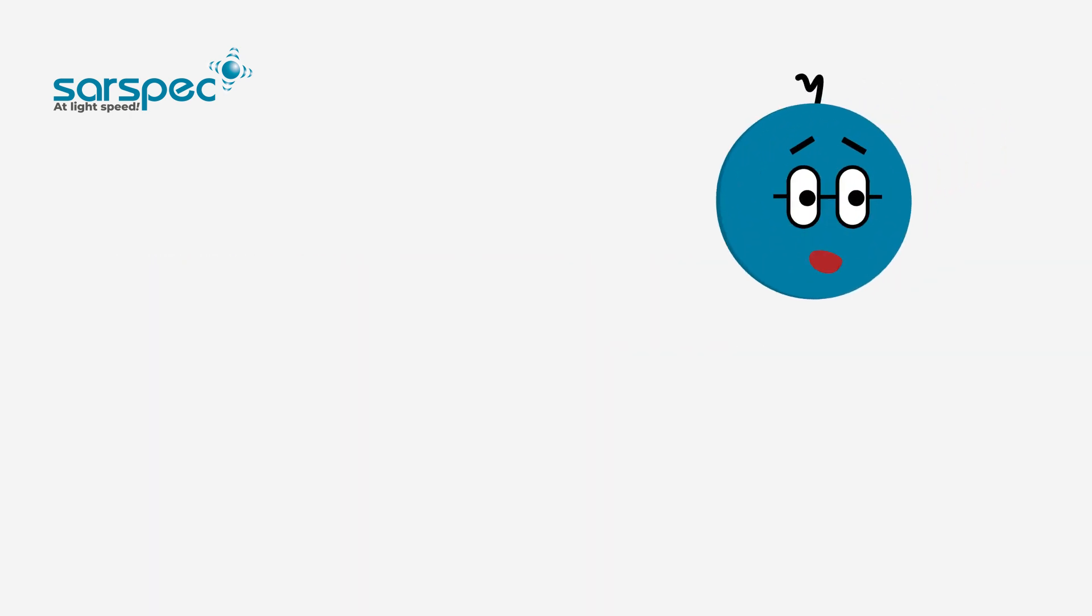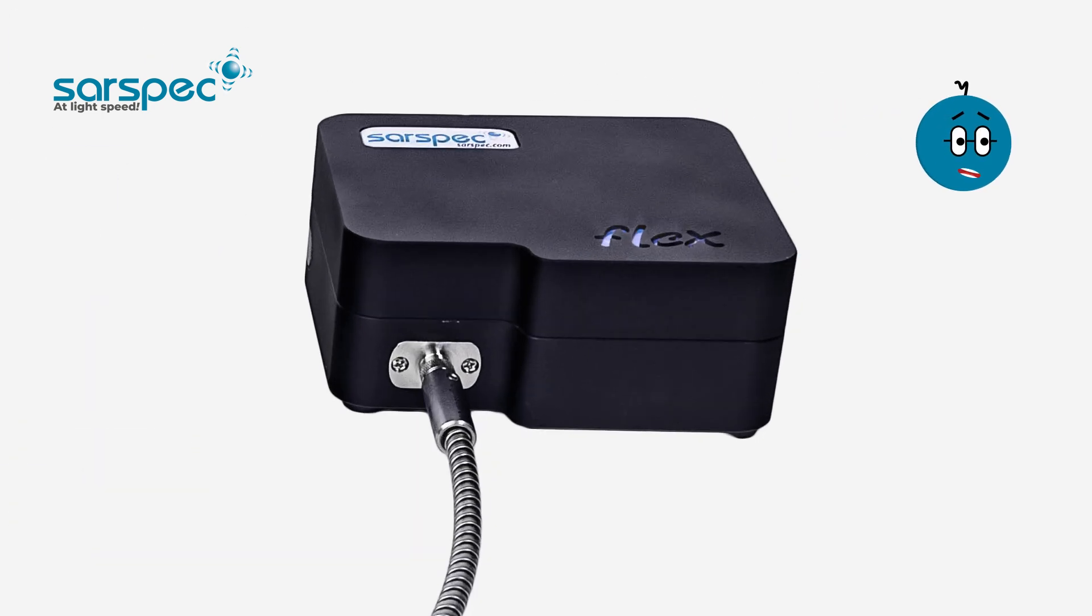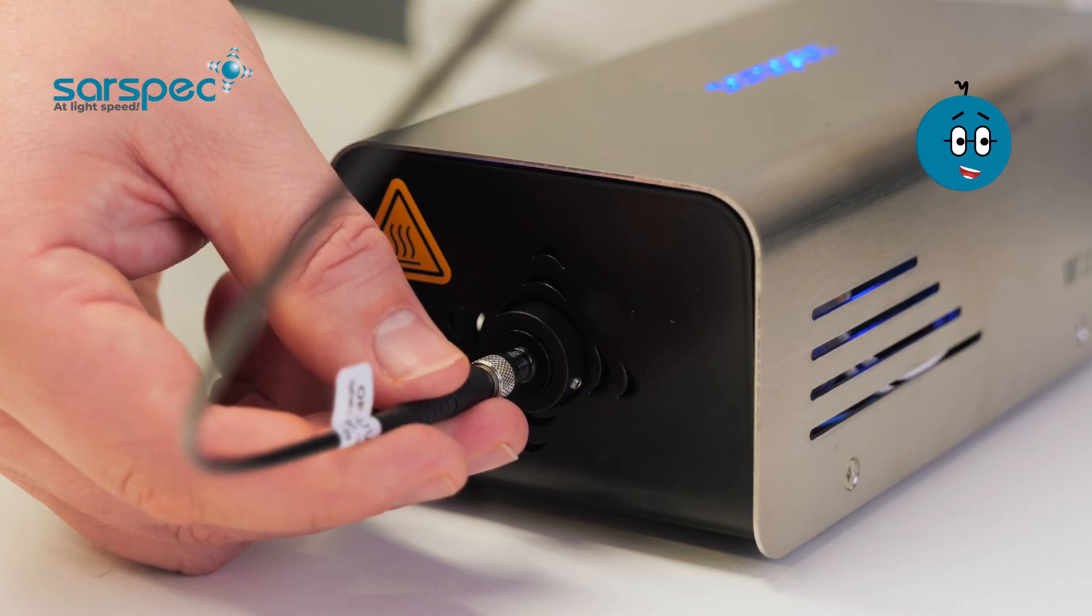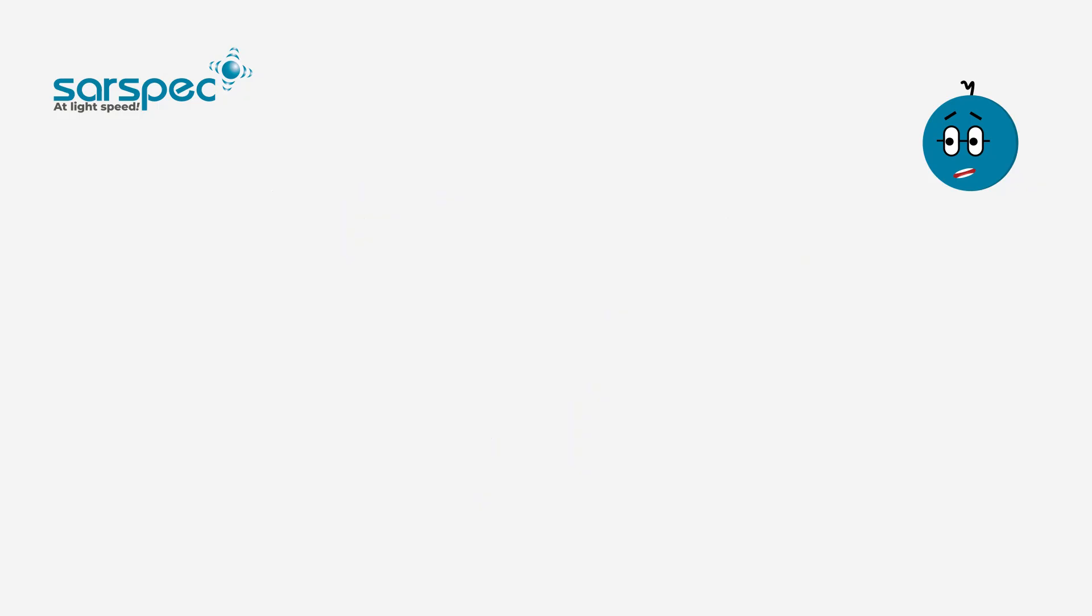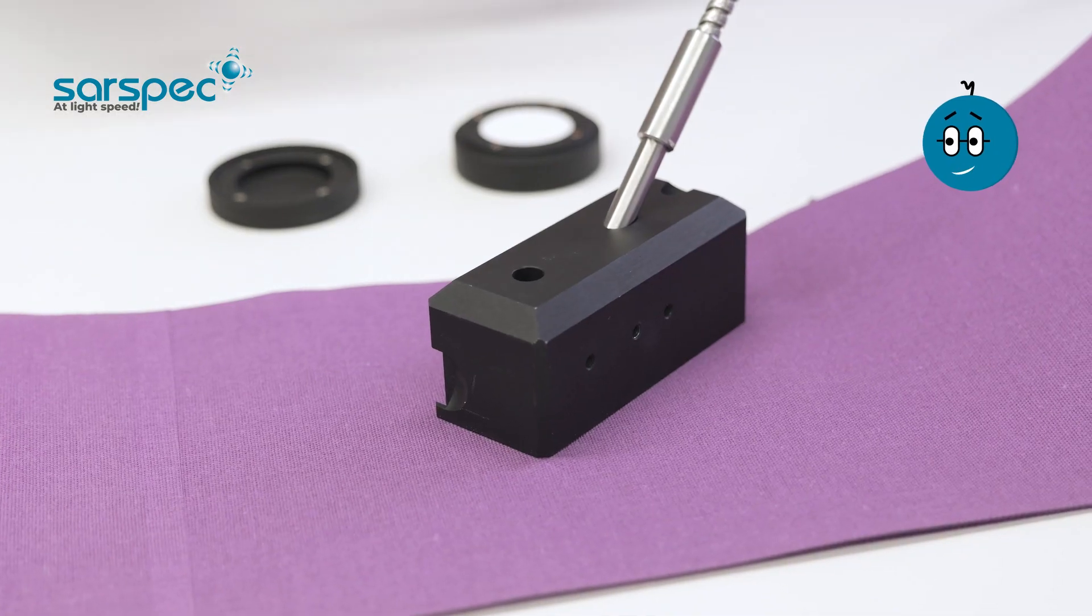In our reflectance solutions, all components - spectrometers, light sources and sampling accessories - are independent and connected through optical fibers. So you can easily reconfigure your setup for different wavelength ranges and types of sample.